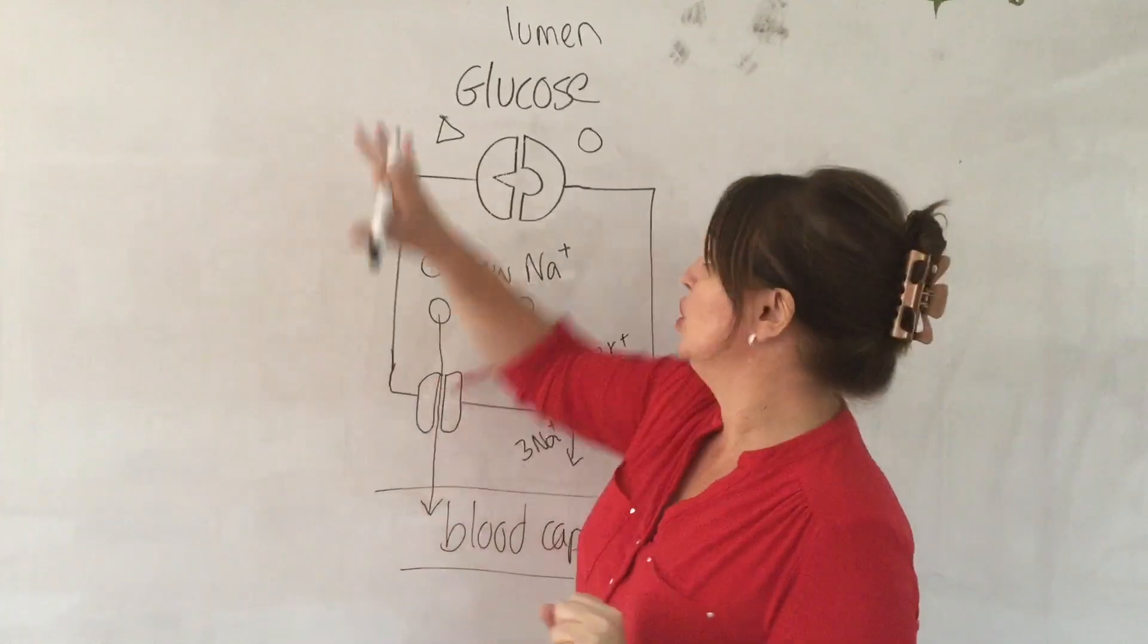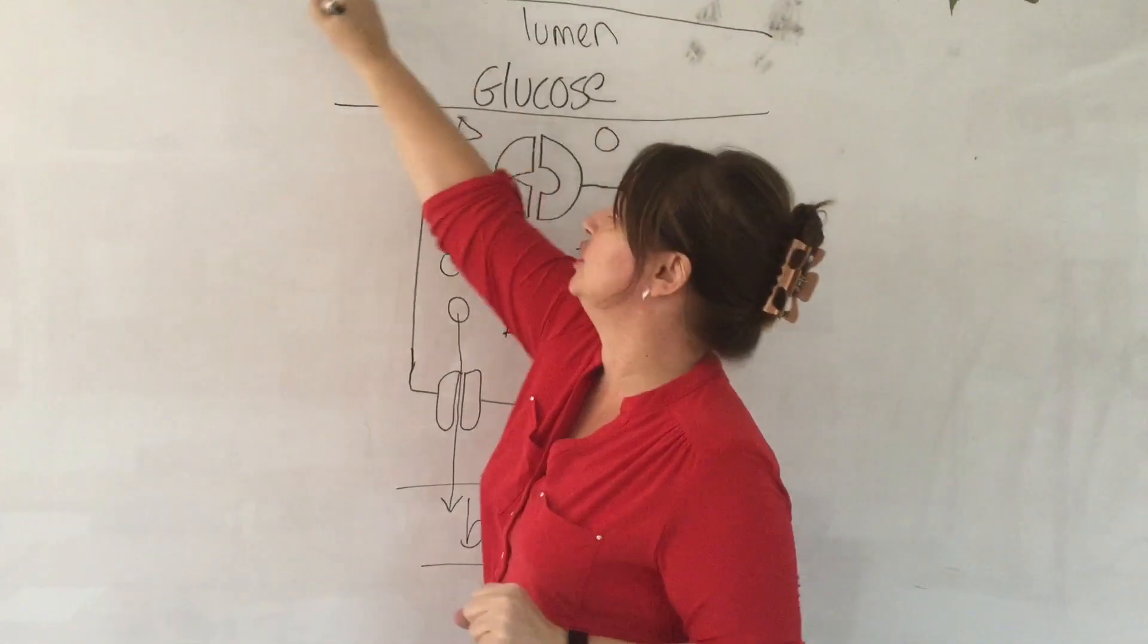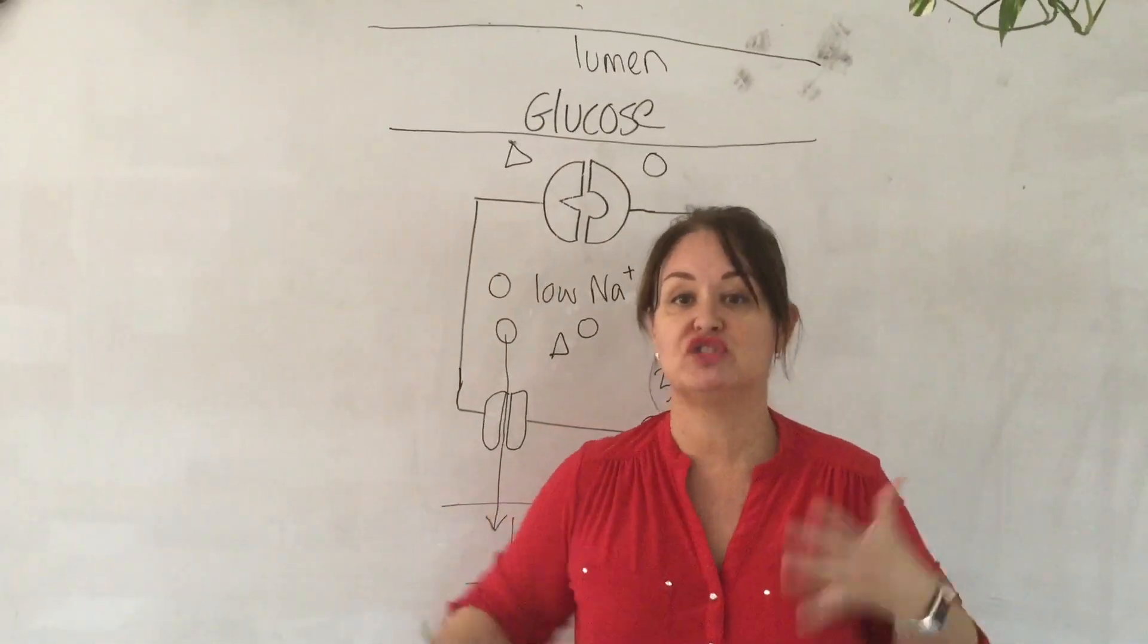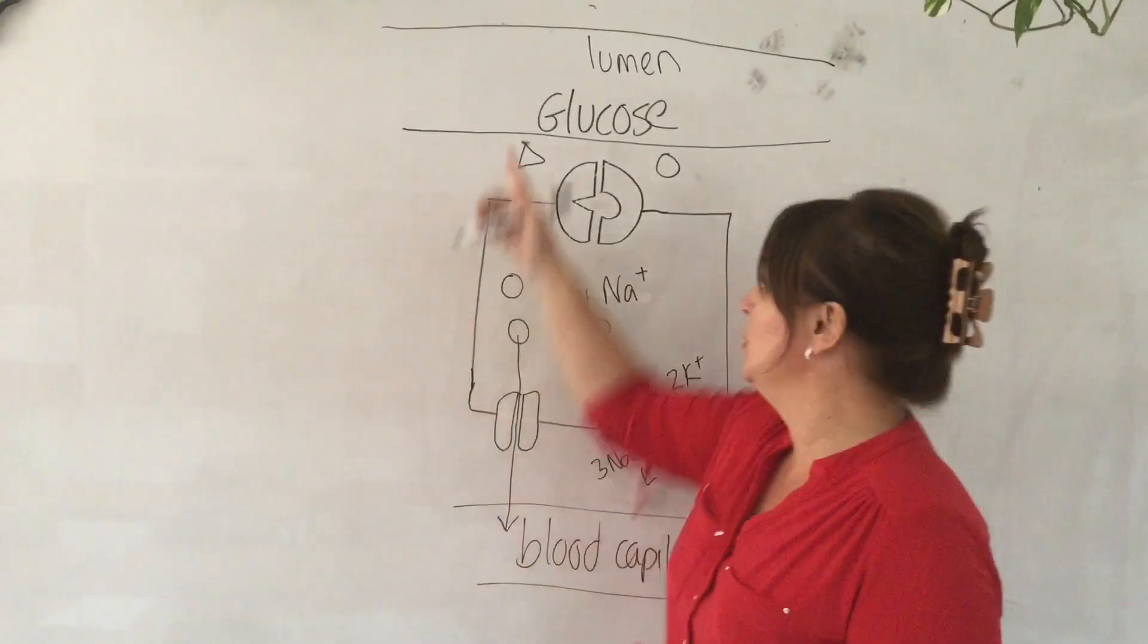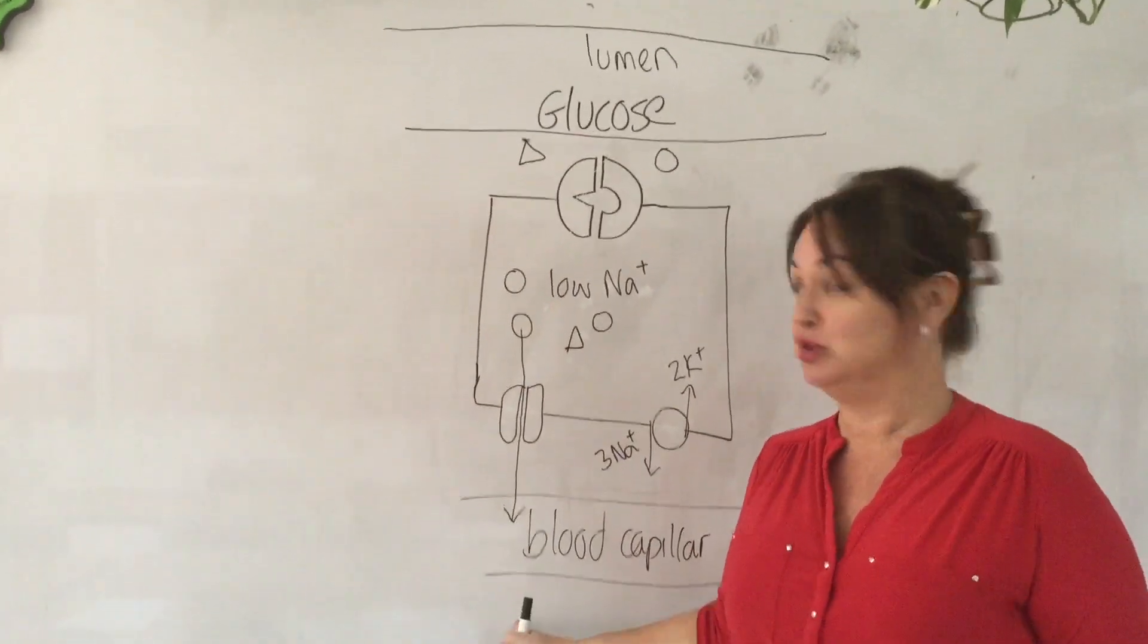So, just to recap, we've got our lumen here. And the lumen has a high concentration of glucose because you've just digested a meal. We want to move it into the epithelial cell and then into the blood capillary.